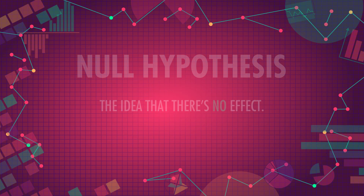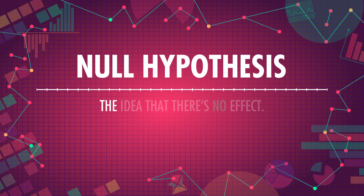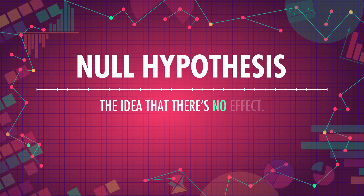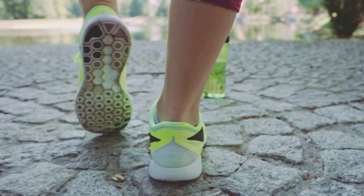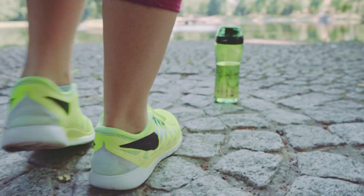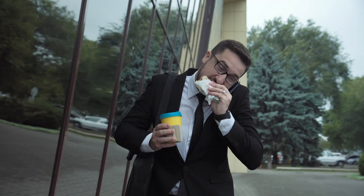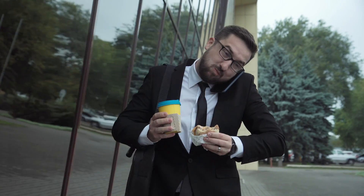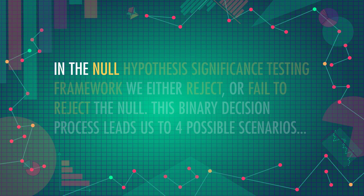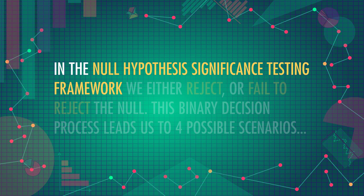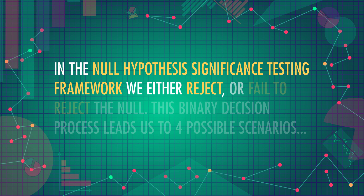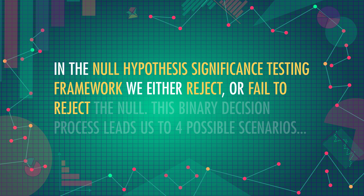To recap, to calculate a p-value, we look at the null hypothesis, which is the idea that there's no effect. This can be no effect of shoe color on the number of steps you walk today, or no effect of grams of fat in your diet on energy levels. Whatever it is, we set this hypothesis up just so we can try to shoot it down. In the null hypothesis significance testing framework, we either reject or fail to reject the null.